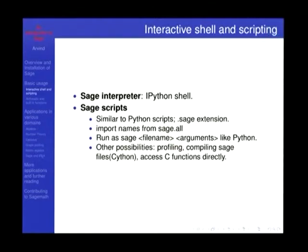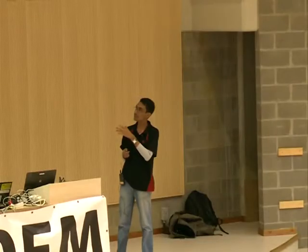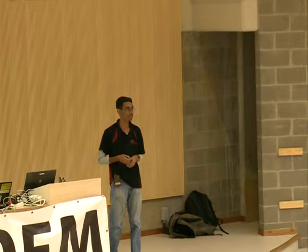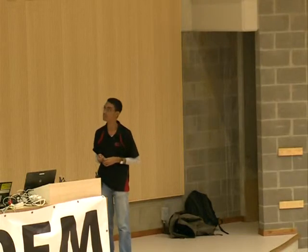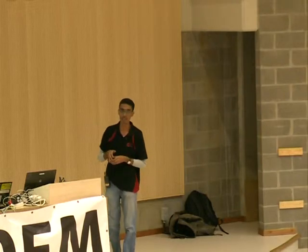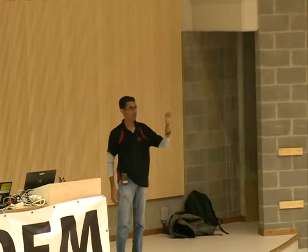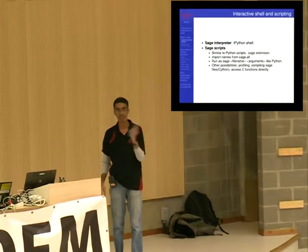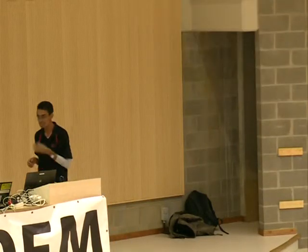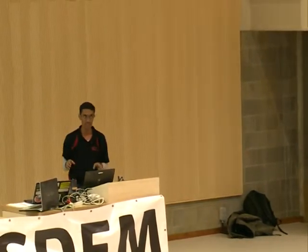You can write Sage scripts, not just use the interpreter. Sage scripts can also be profiled, and you can even compile Sage files directly into C using Cython — Cython is actually maintained by the Sage developers. You can profile your code, see which parts take the most time, and choose to move them to C or compile with Cython. That's one of the biggest advantages, especially in computationally intensive applications.